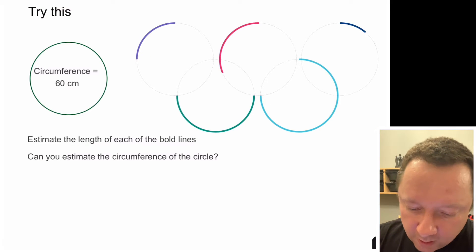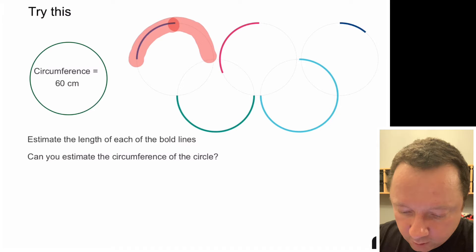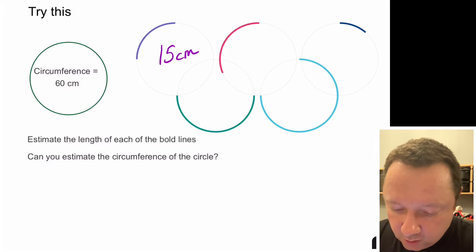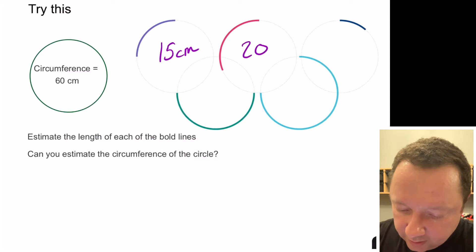Okay so back to this one. With the first one, probably about four of them in that circle. So a quarter of 60 would be 15 centimetres for the first one. For the second one you should be able to see one maybe another two would be in there so three of them would make the whole circle. So maybe a third which would be about 20 centimetres.